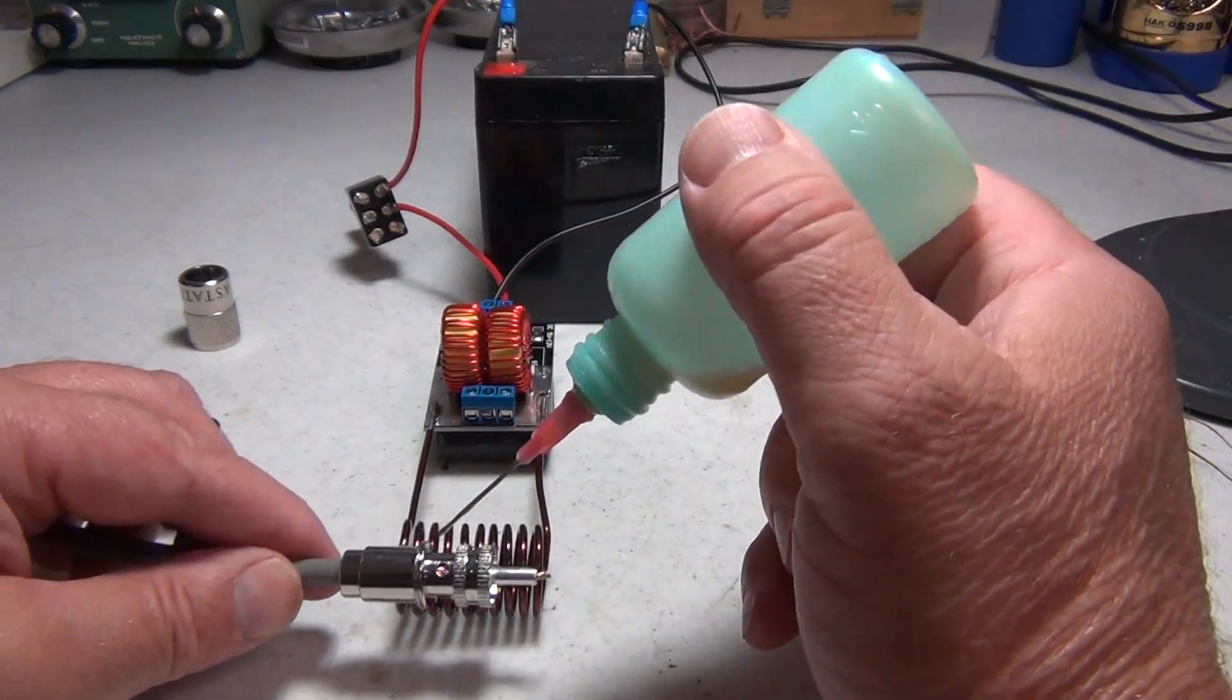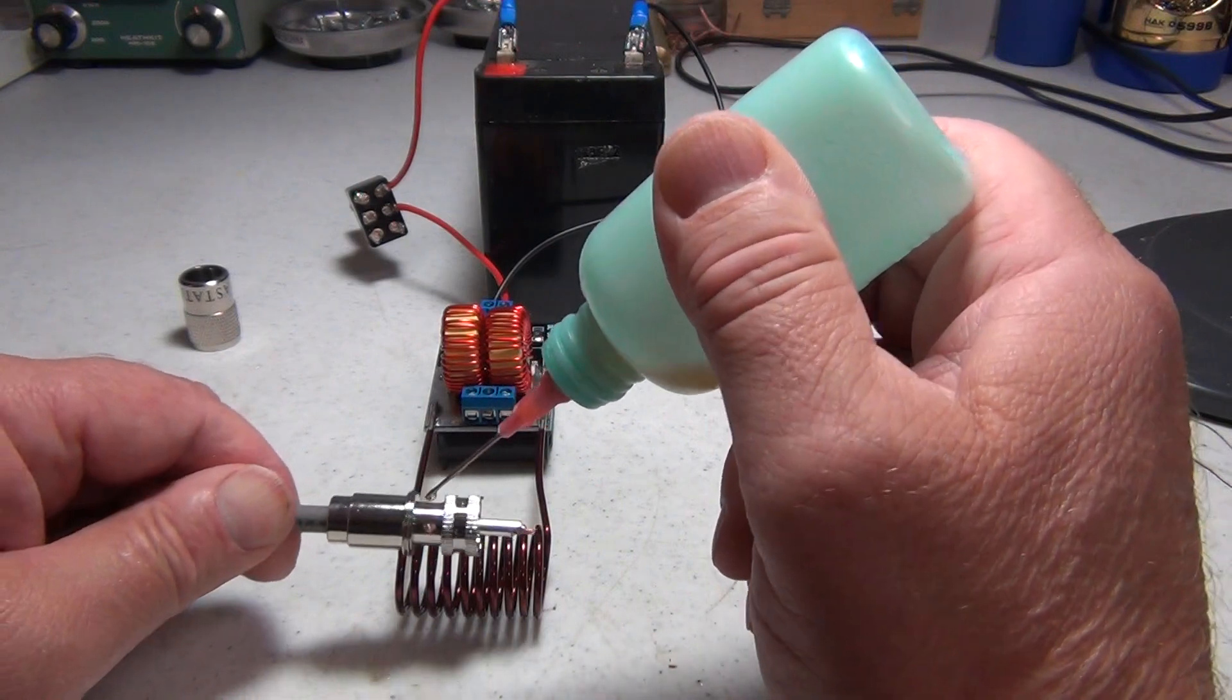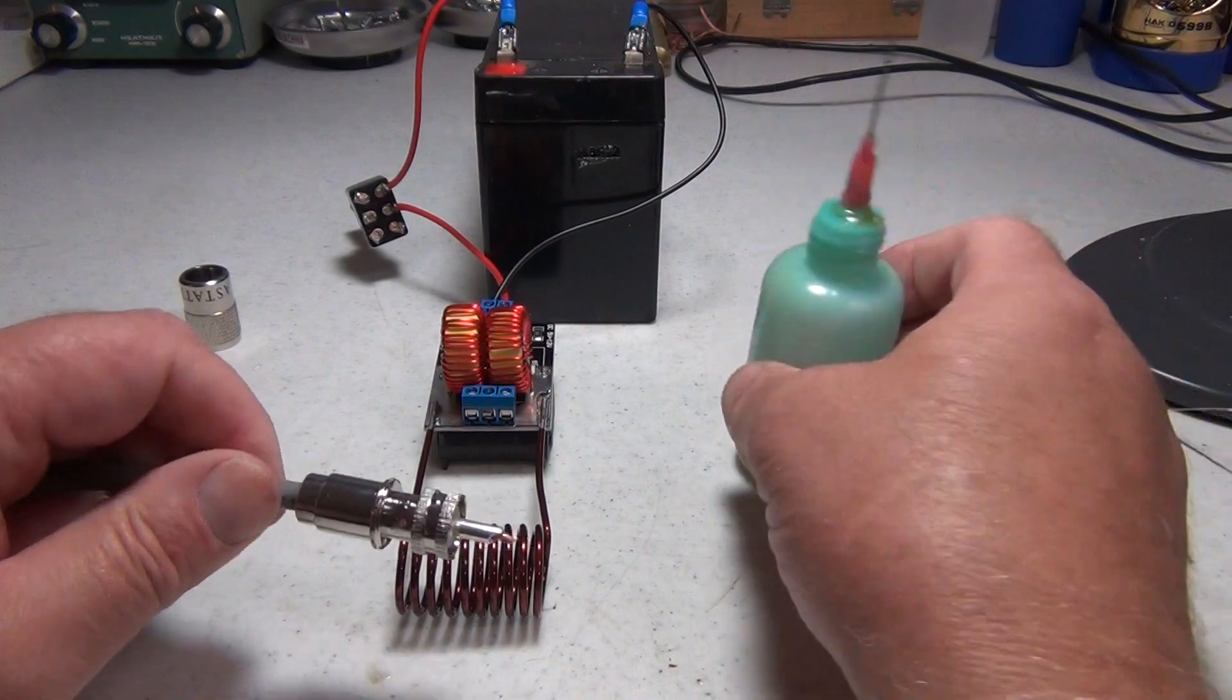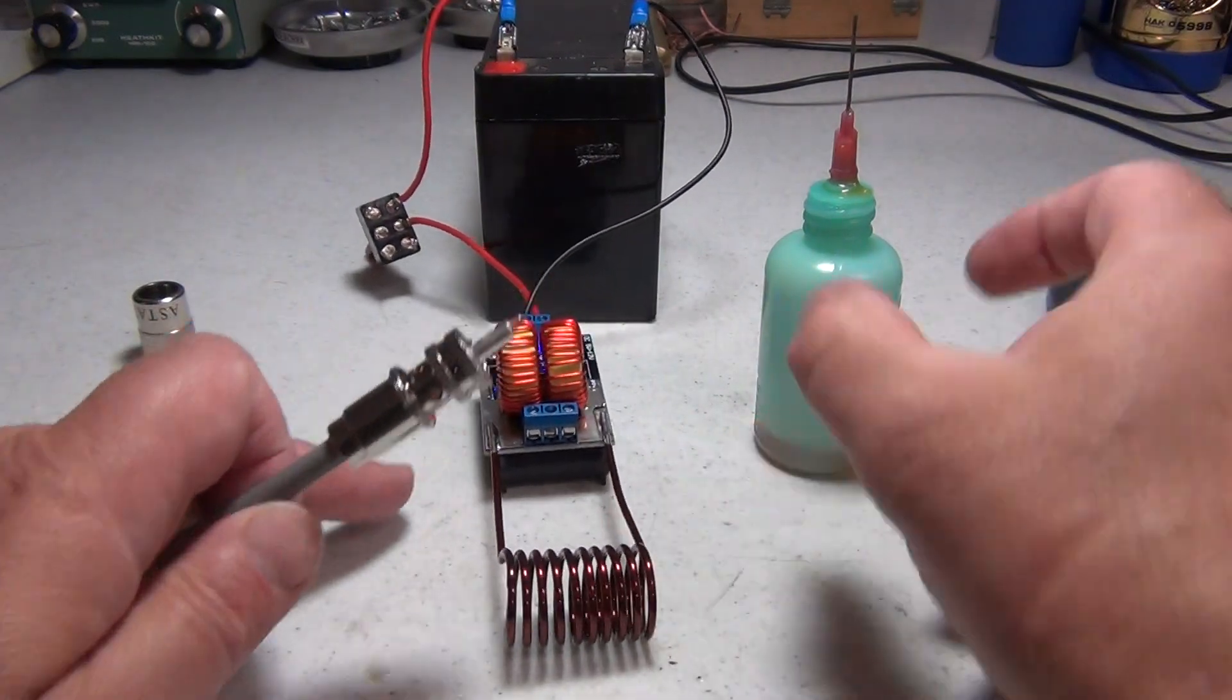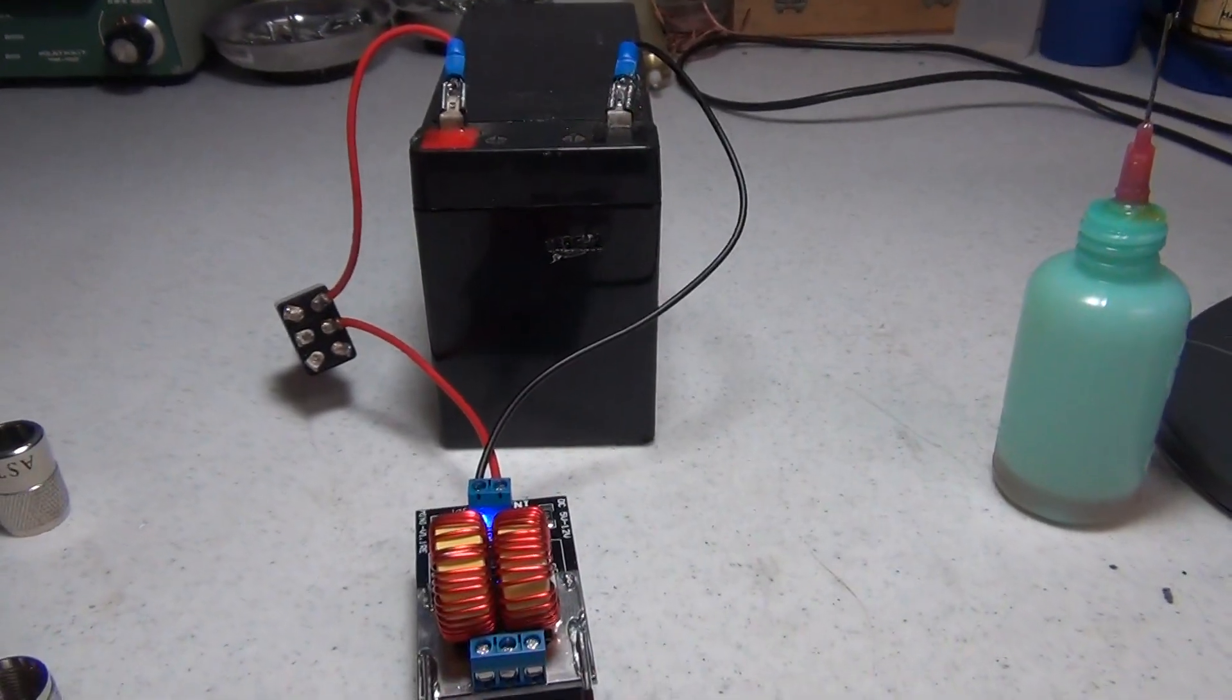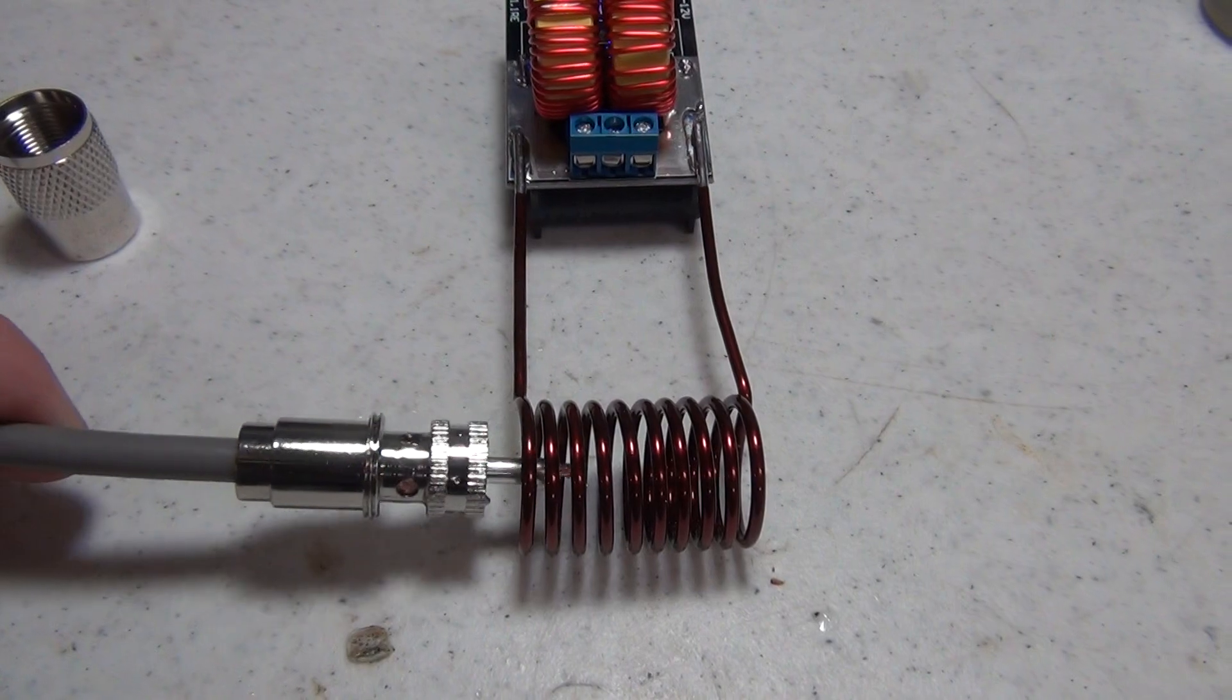An important step is to put a drop of RA flux down in the center so the solder will flow nicely. Then I'm going to turn it on. You've got a blue light here, so it is oscillating.